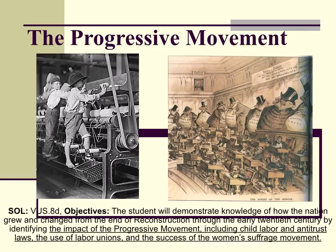Now that we've talked about the movements of people and the economy of the late 1800s and early 1900s, now we're going to talk about the political movement of this point in time and how the social and economic changes influence the political changes. This is known as the progressive movement.